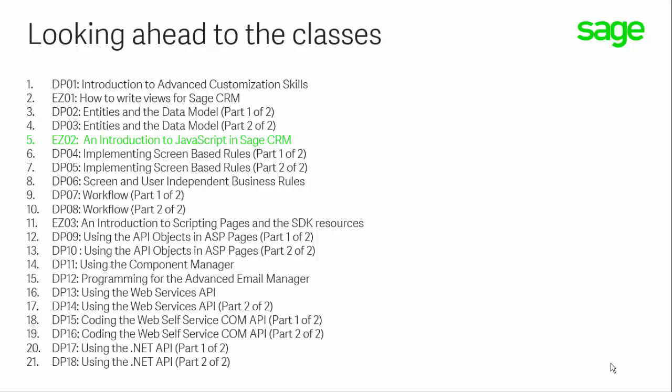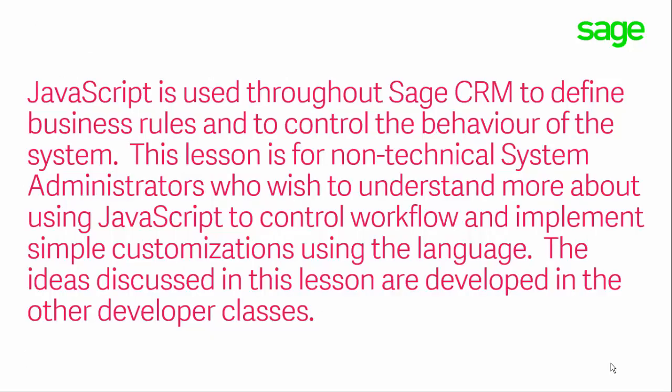We're going to be understanding the way in which Sage CRM works. The database is fundamental to understanding everything within Sage CRM, and there is a logical sequence about how we've assembled the training — building outwards from the database through to the interface through to the scripting languages. That's why this lesson builds on the previous lessons, and nearly all of the following lessons will draw on the information that we discuss here. JavaScript is used throughout Sage CRM to define business rules and to control the behavior of the system. We've aimed this lesson to be suitable for non-technical system administrators who want to understand more about using JavaScript to control workflow and to implement simple customizations using the language.